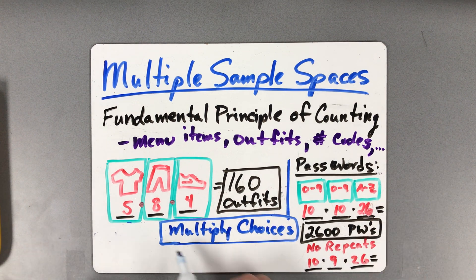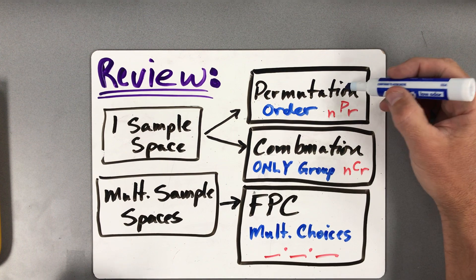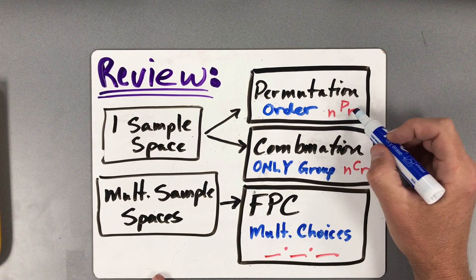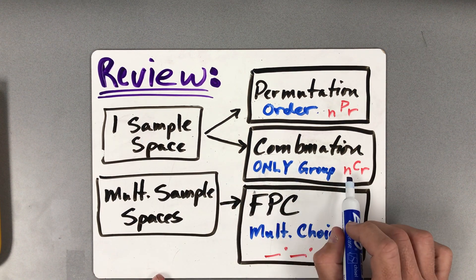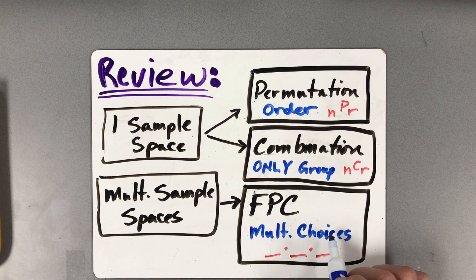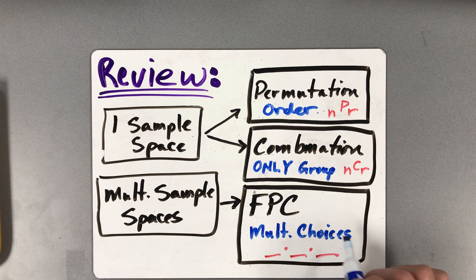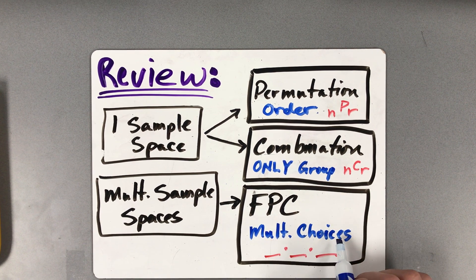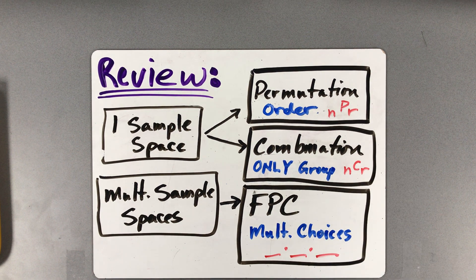If you talk about not being able to repeat a digit, if you use one in the first position, then there's only nine left, so you just go 10 times 9 times 26 and get your answer that way. So with multiple sample spaces, it's all about multiplying your choices together. If you have one sample space, then we're talking about permutations and combinations. Use your nPr if the order's important. If the order's not important from what you're selecting from one sample space, then it's nCr on your calculator. And if you're doing outfits, menu items, license plates, passwords, passcodes, where you have multiple sample spaces to choose from, then you just multiply your choices together from each sample space. That's it, and hopefully this makes sense.